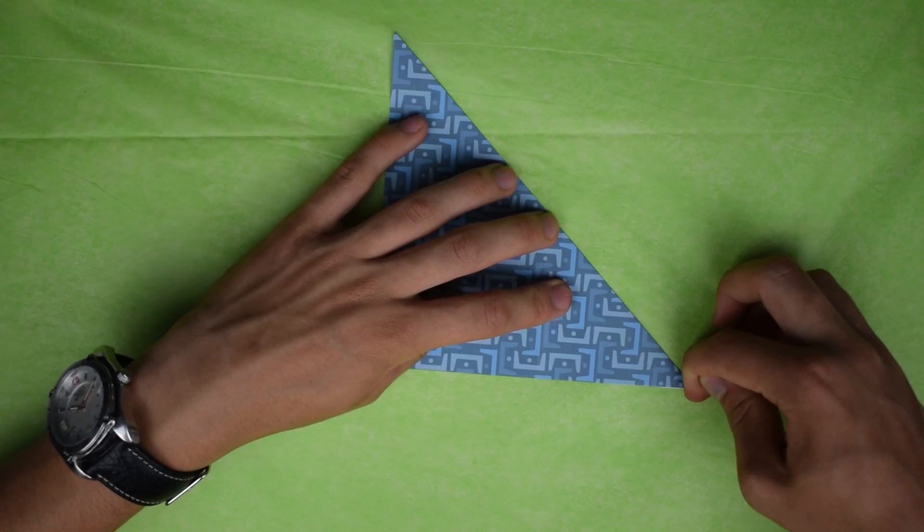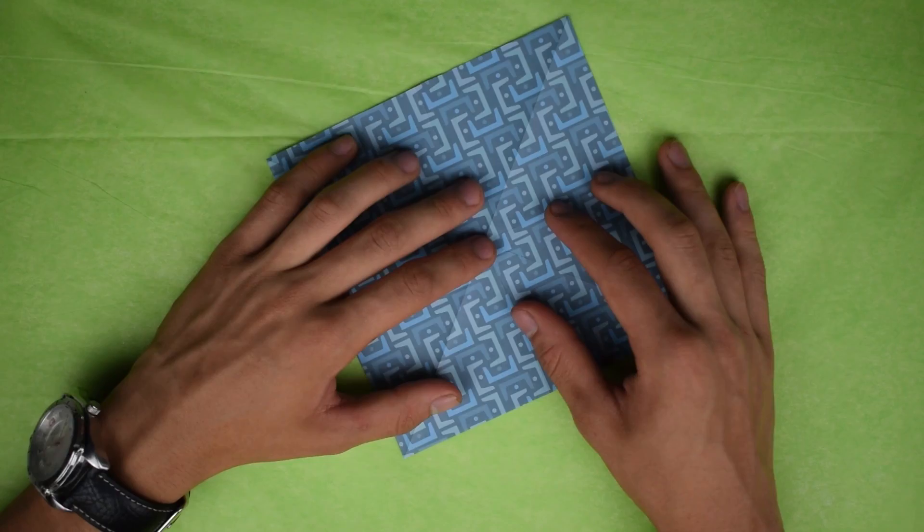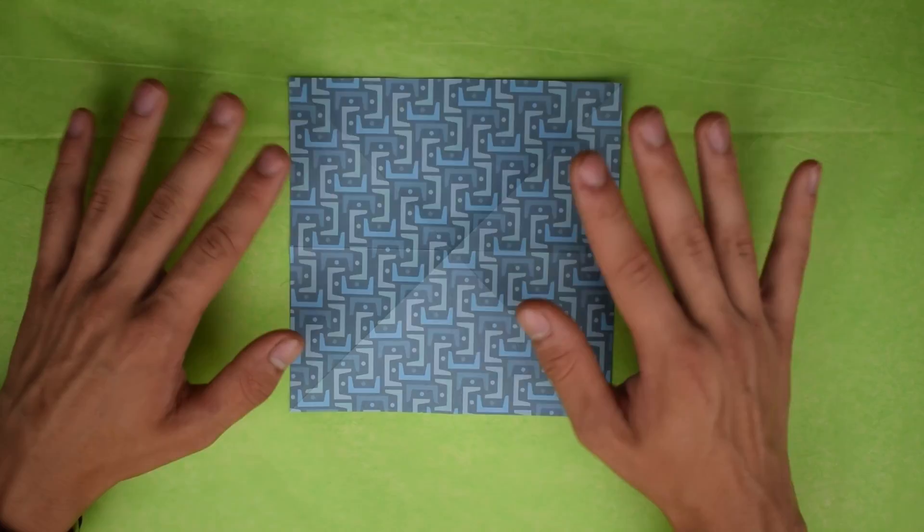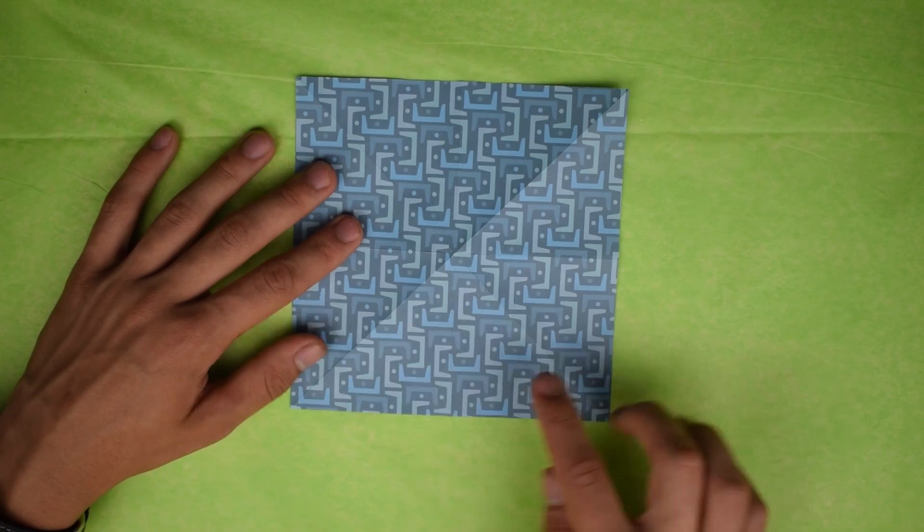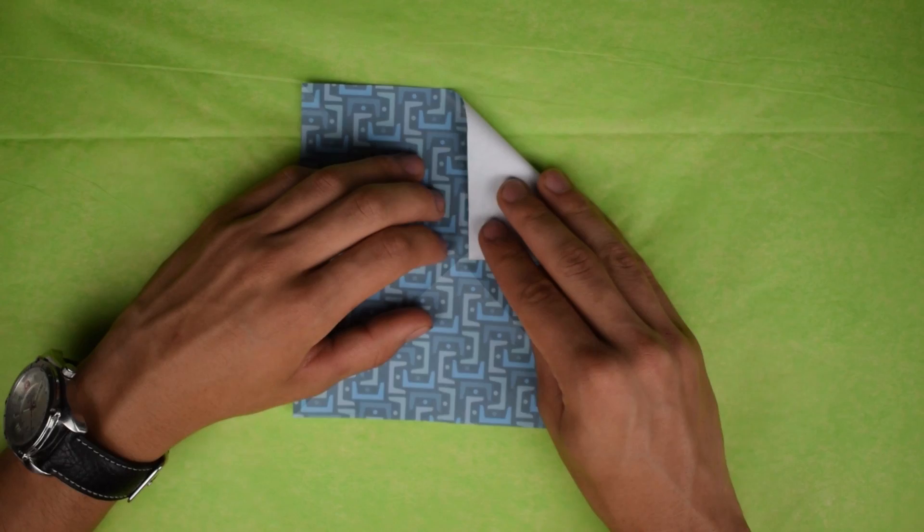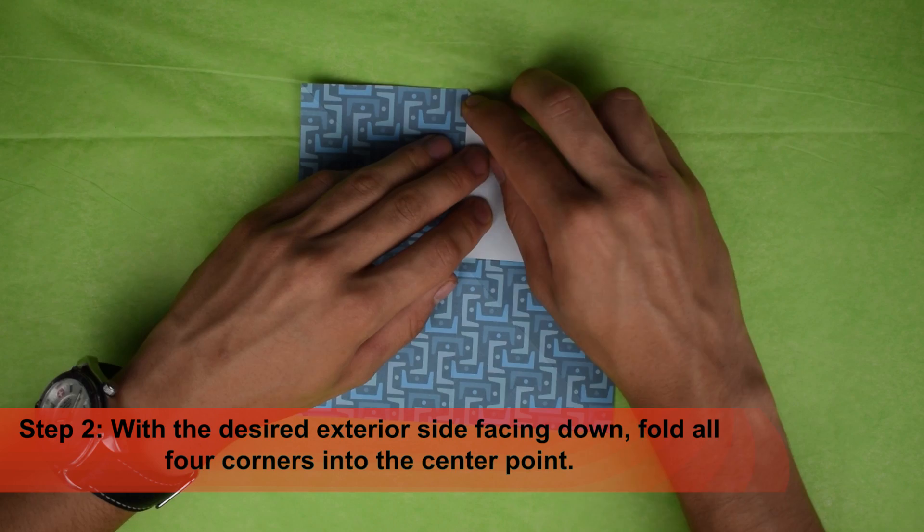Okay, once you've done all that, we're going to unfold and we're going to have it so that our interior side is going to be facing up. So again, for me, this is going to be the inside. So now what we're going to do is we're going to fold each of the four corners into the center point. And that's where all the lines cross. So go ahead and take each corner and fold it in to the center point.